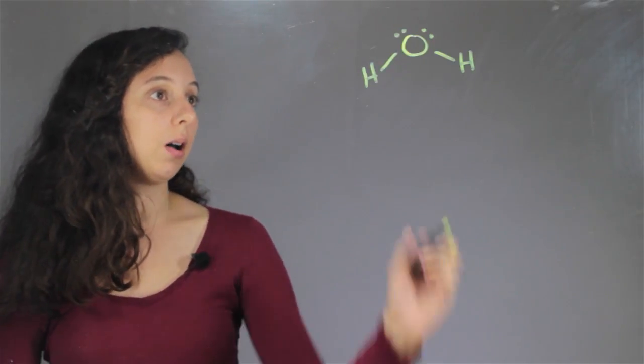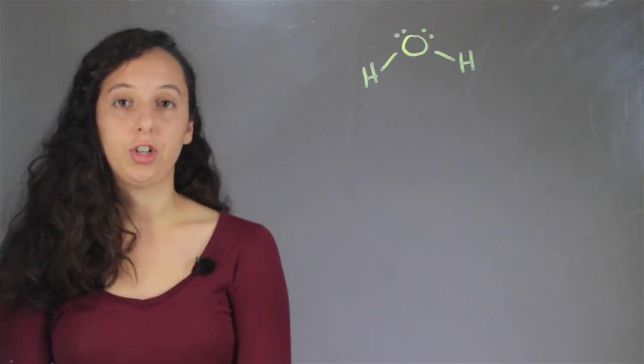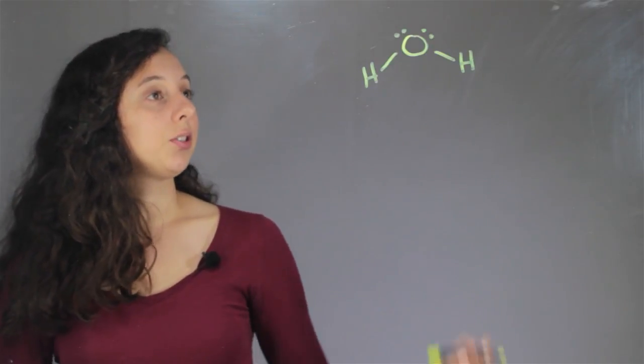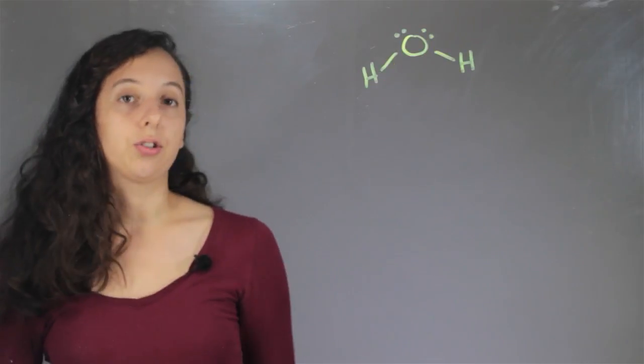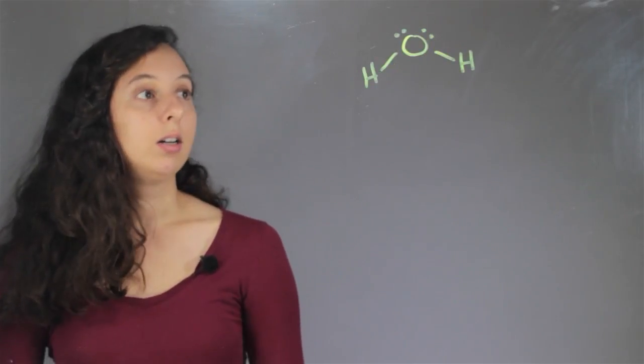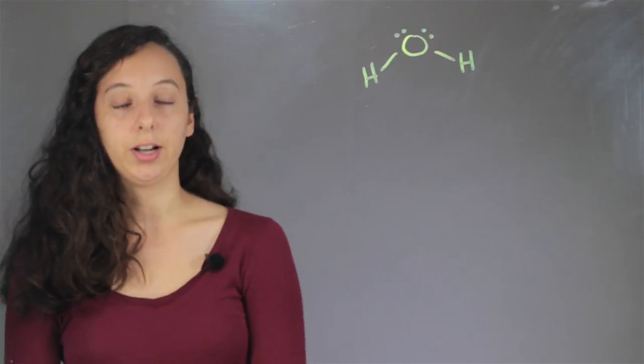So it's going to make two bonds with a hydrogen, and now it has a total of one, two, three, four, five, six, seven, eight electrons, because every bond is made of two electrons.